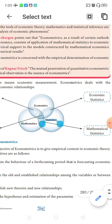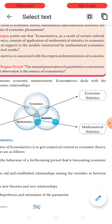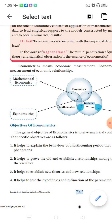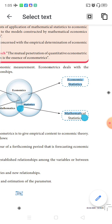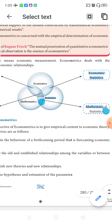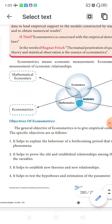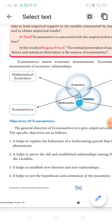The next definition is by Ragnar Frisch, the Norwegian economist and Nobel Prize winner in econometrics. He says: the mutual penetration of quantitative econometric theory and statistical observation is the essence of econometrics. That is, quantitative econometrics and statistical observations mutually penetrate the deep essence of the subject — the essence of these two subjects is the essence of econometrics.